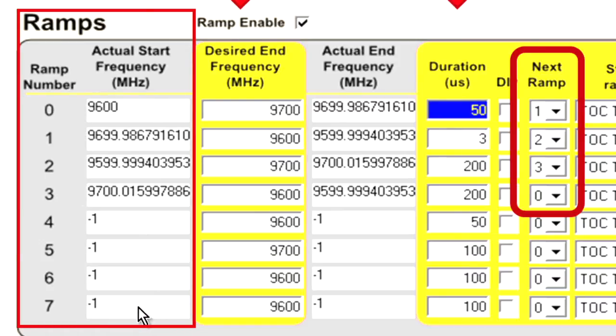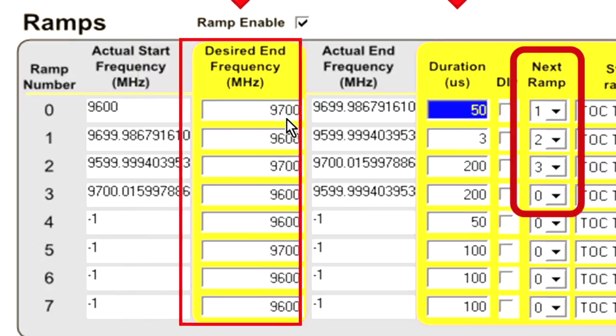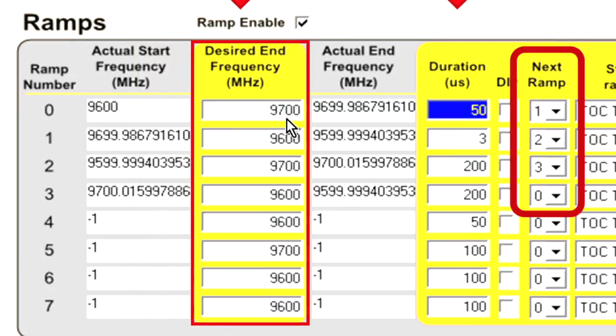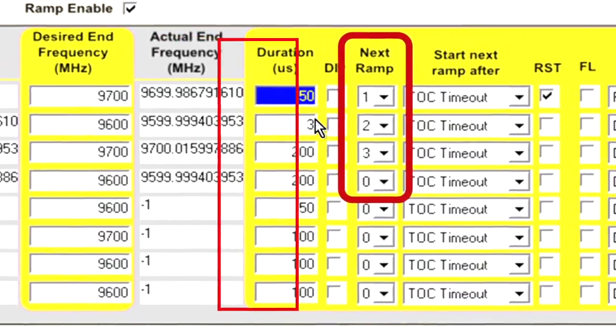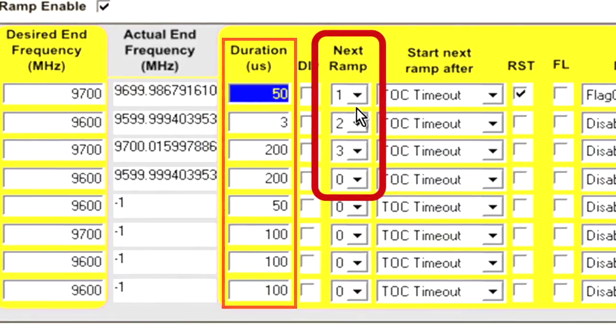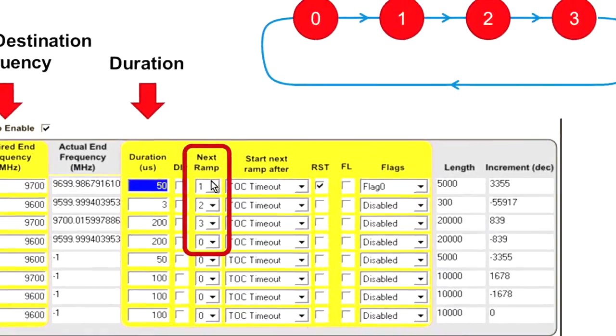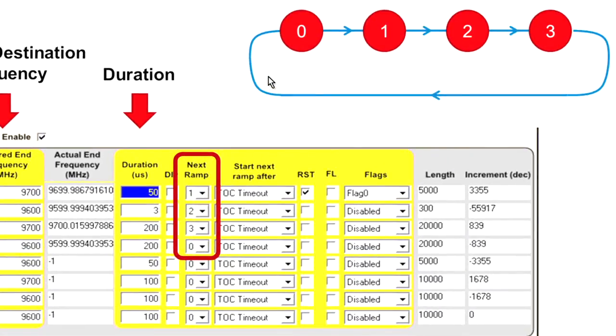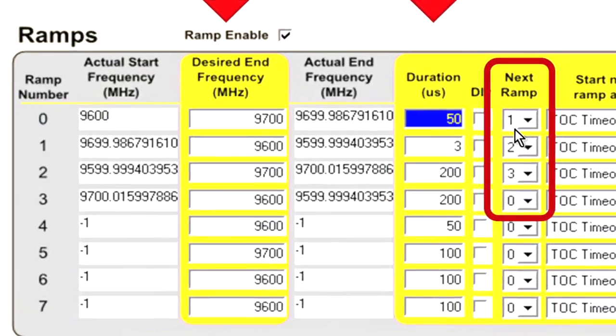For each state, we set the desired destination frequency and the duration. And finally, we also set the actual next state that we want to go to. Since here we're doing 0, 1, 2, 3, 0, 1, 2, 3, we do from 0 to 1, so on and so forth, 3 down back to 0.